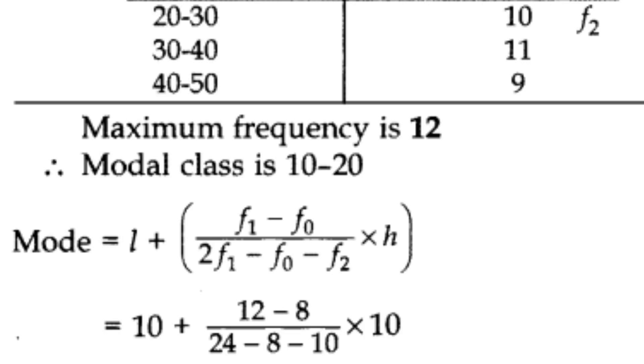The formula for the mode here is: l plus (f1 minus f0) upon (2f1 minus f0 minus f2) into h.